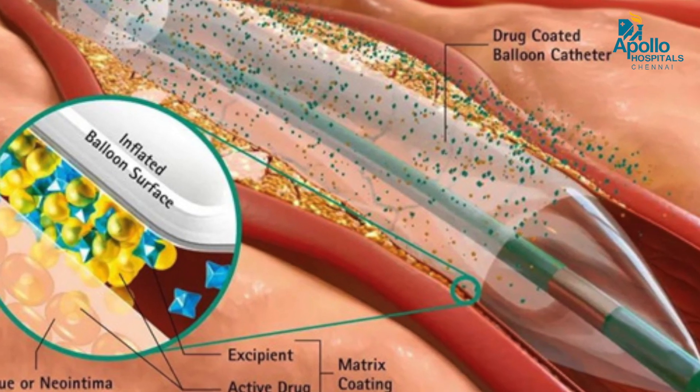Let us see what are all the devices or gadgets to treat the calcium. One is as simple as balloon-based devices like the semi-compliant balloon or a non-compliant balloon, which can be used to crack the calcium. There are other balloons like the non-compliant high-pressure balloon called the OPN, a dual-layered balloon. The advantage of these balloons is that we can go up to high pressures — even up to 30 to 40 atmospheres — to crack the calcium.